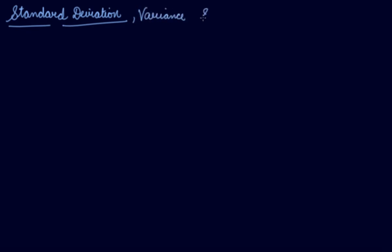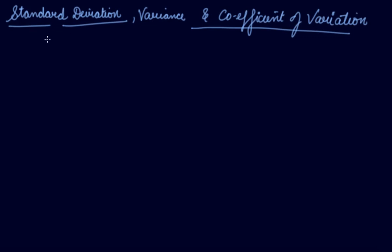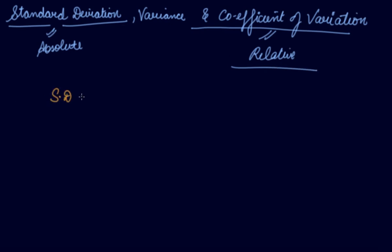In this video we will be studying about standard deviation, variance, and coefficient of variation, also known as coefficient of standard deviation. Standard deviation is your absolute measure of dispersion, whereas coefficient of variation is your relative measure of dispersion.